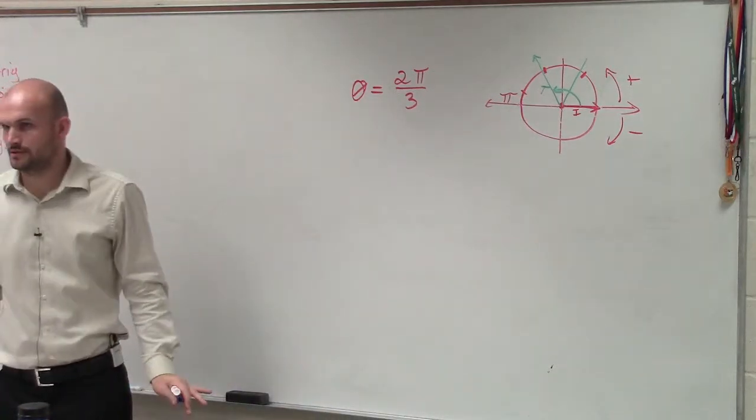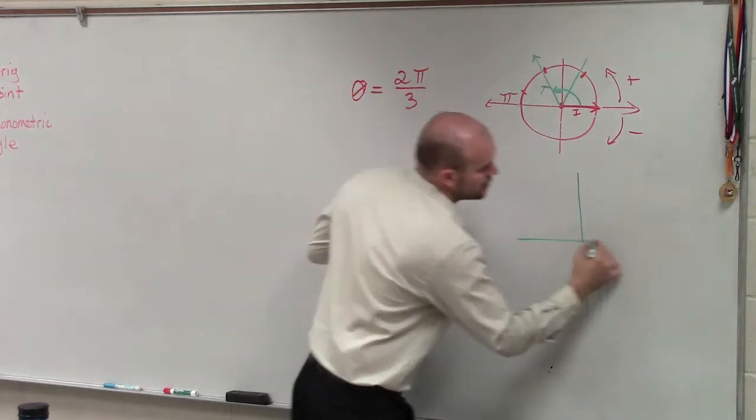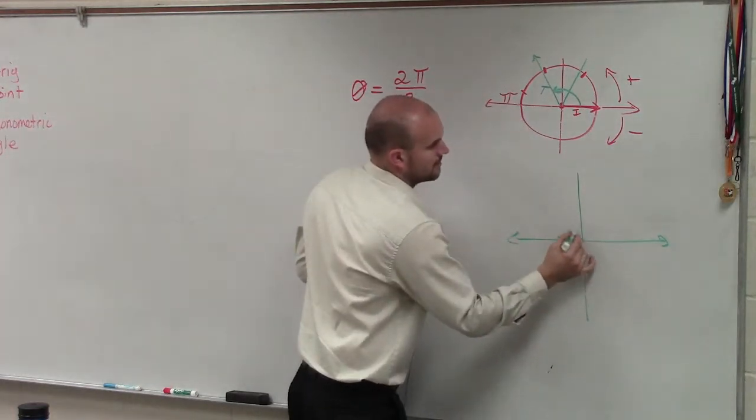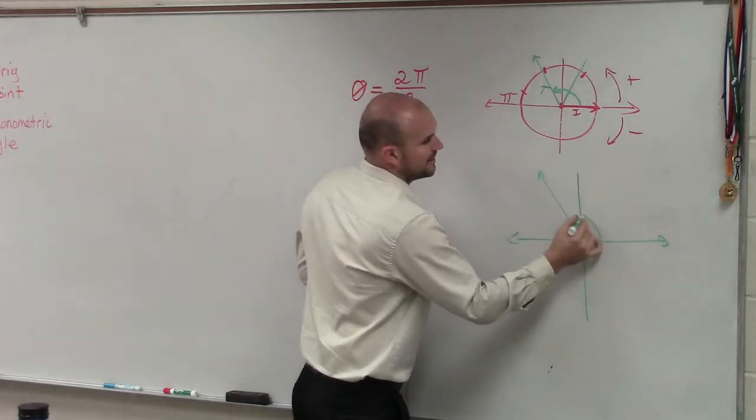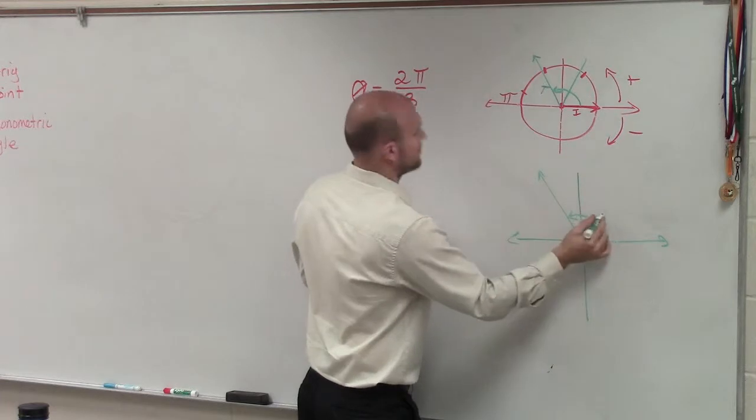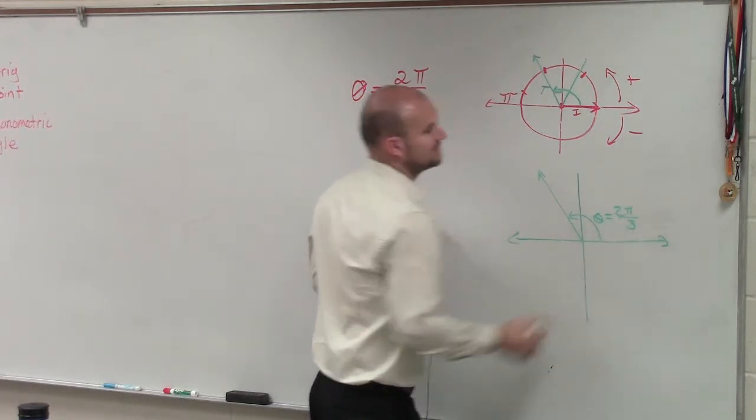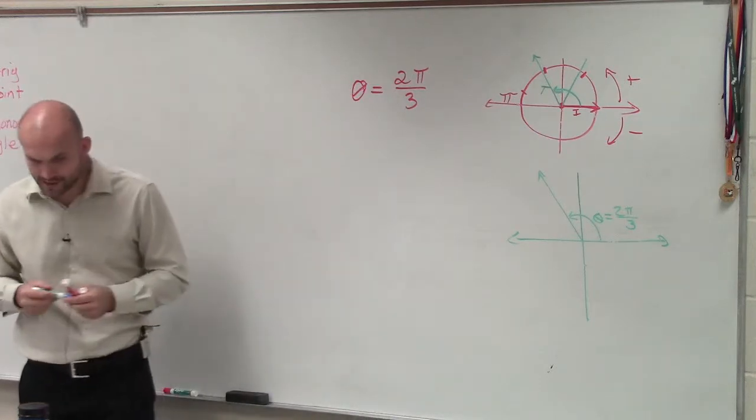Does everybody follow me so far? All right. So now let's get rid of all the jazz, and let's just draw what our angle looks like. So it's from here to here, where our angle is equal to theta equals 2 pi over 3.